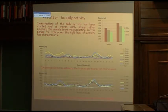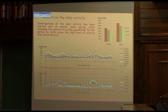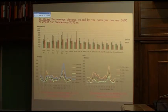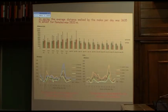Results on the daily activity: the activity gradually decreased and recovered to the average value specific for the season within one month. One can notice that the average daily distance made by females starting from the middle of the season is higher than the distance made by males.